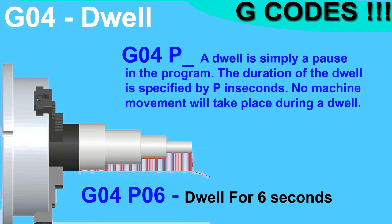G04 is for dwell period. It is a non-modal code used to stop the tool at a position for a specified number of seconds, using the P value. For example, G04 P06 will stop the tool at its current position for six seconds, then move to the next block. With G04, only the tool stops — the spindle and coolant remain on. This code is used during drilling, grooving, or parting off to help break chips.